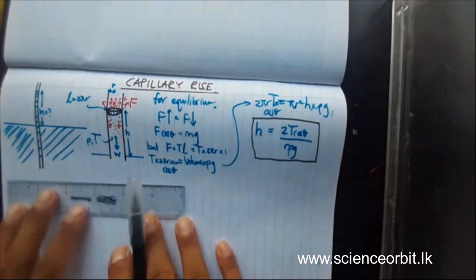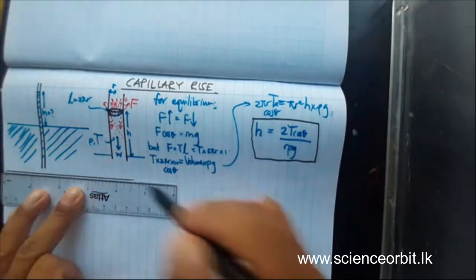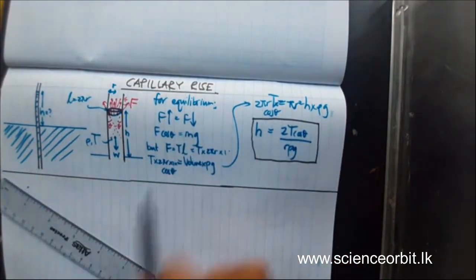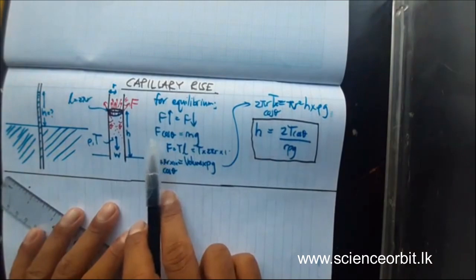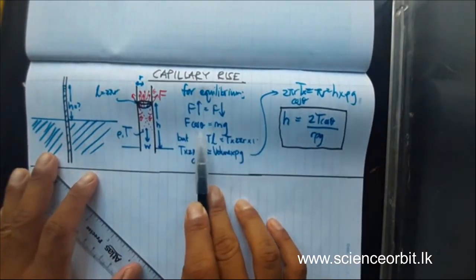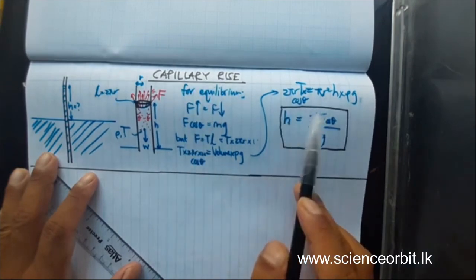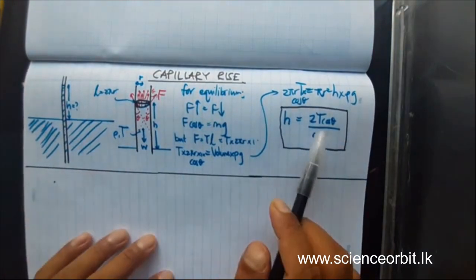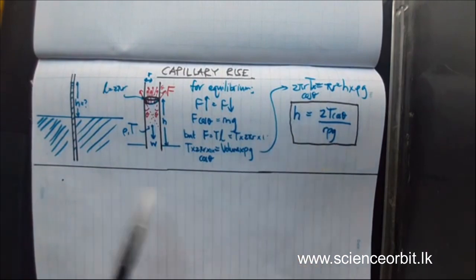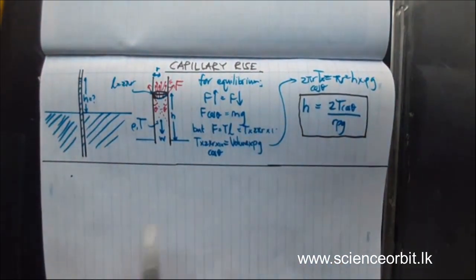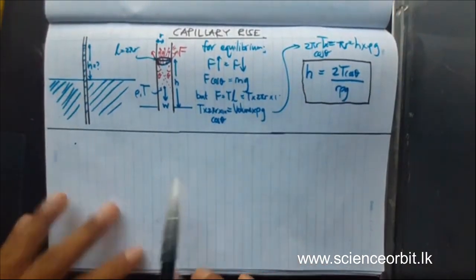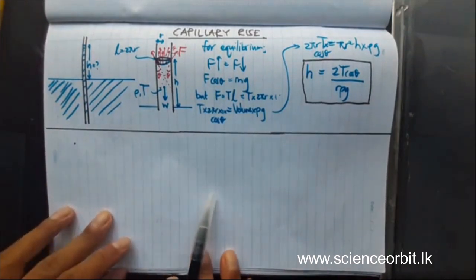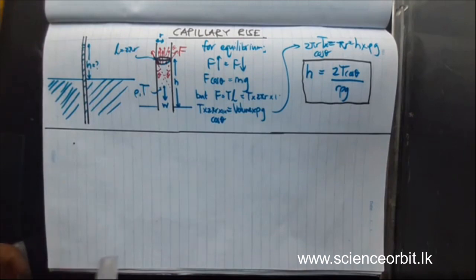I am going to derive this equation in another method as well. Sometimes you might have to derive this in essay questions. The first method is the easiest — do not forget the contact angle. If they say contact angle is 0, then cos 0 is 1, and you get H = 2T / (R rho g). But remember the general equation so you are always on the safe side. The second method uses the formula for pressure difference across a spherical liquid meniscus, which we learned in the previous tutorial.